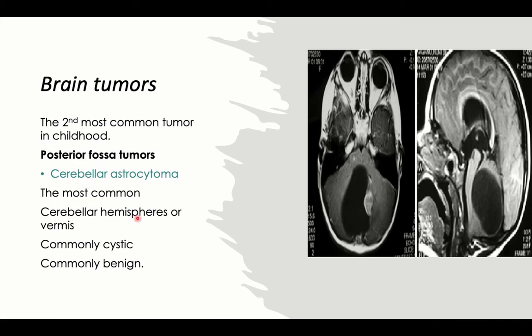Cerebellar astrocytoma can be in the hemisphere, presenting laterally, or in the vermis, presenting centrally. It is commonly cystic, as seen on MRI, and commonly benign — the most common brain tumor and most often benign, not malignant, with no metastasis outside the CNS.